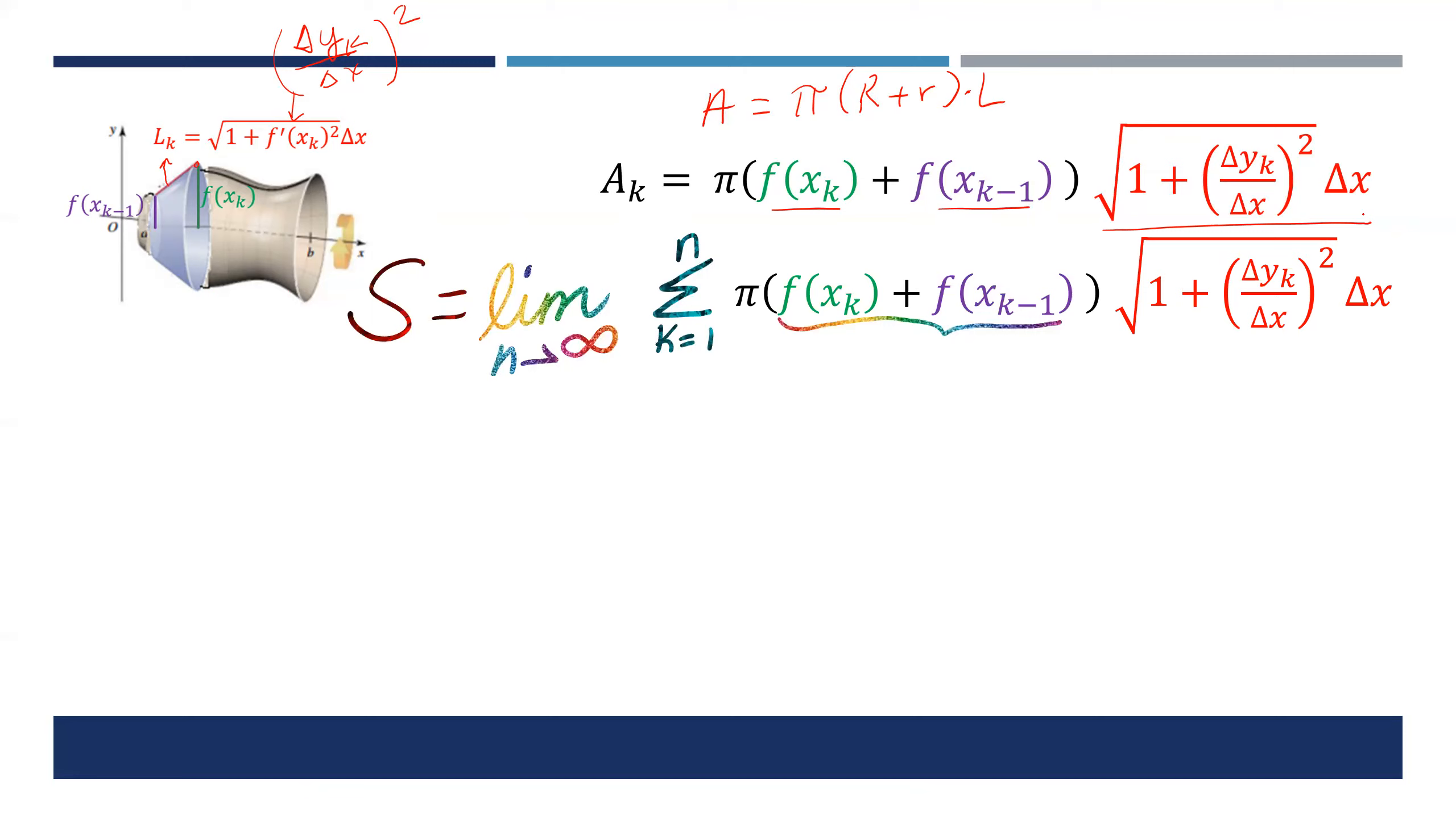What does that mean? It means that when n is approaching infinity these little pieces are very close together, so f of x sub k is pretty much about roughly the same as f of x sub k minus one. So that can be seen as just two times f of x, two f of x values there.